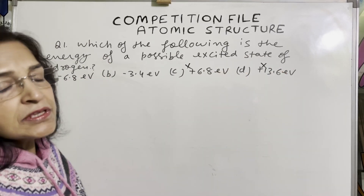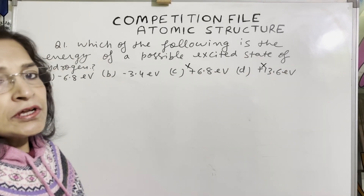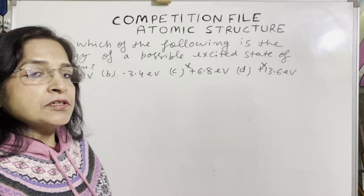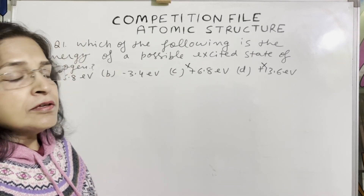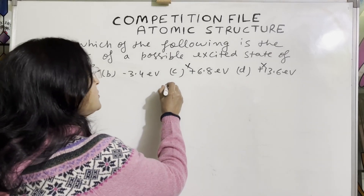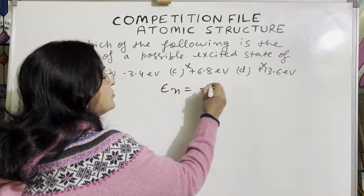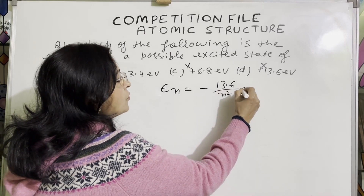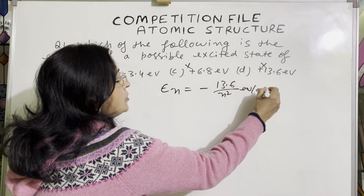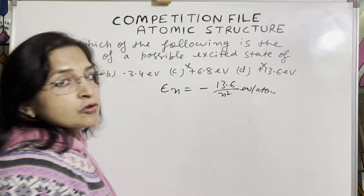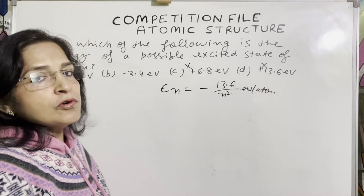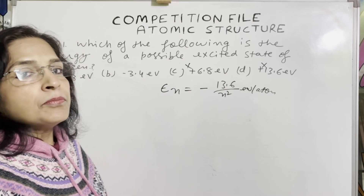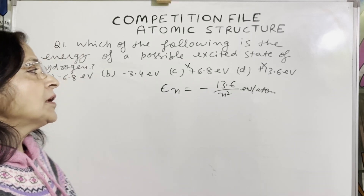Now for A and B, we have to find which value is correct. The standard formula for energy is En = minus 13.6 / N² electron volt per atom. The question is given in electron volts, so we use the eV version of the formula.